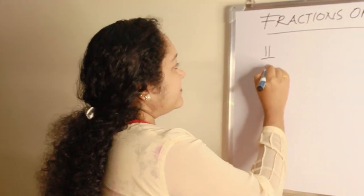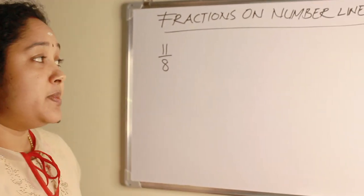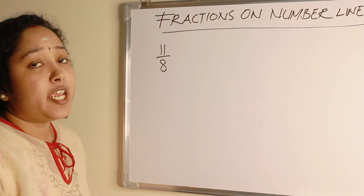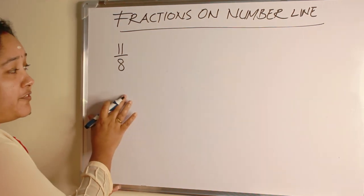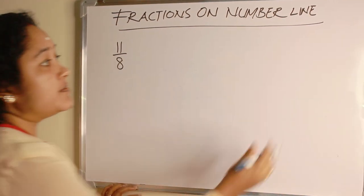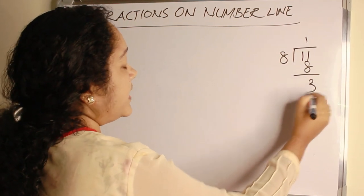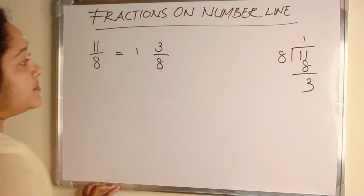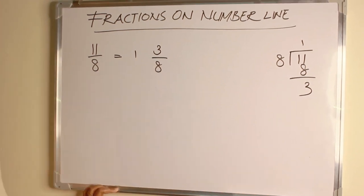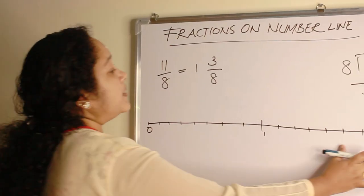Next question is 11 by 8. To represent 11 by 8 is not possible on a number line because it is an improper fraction. First we change improper fraction to mixed fraction. 11 by 8. So we get the answer 1 and 3 by 8. Here 1 is the whole number. 8 is the denominator. So move to the number line.